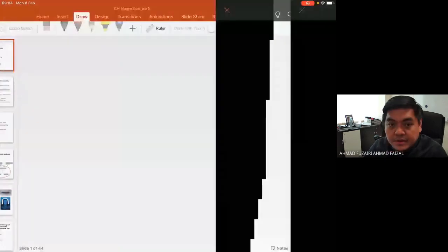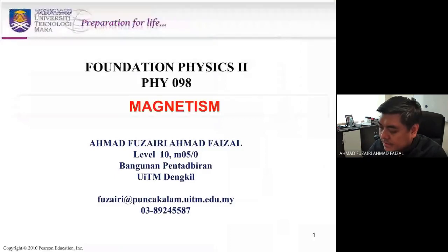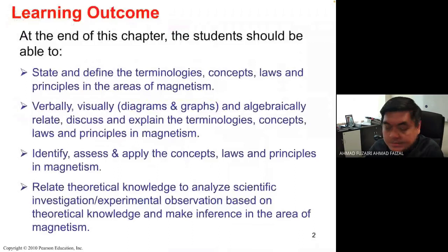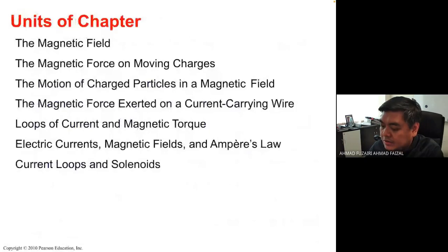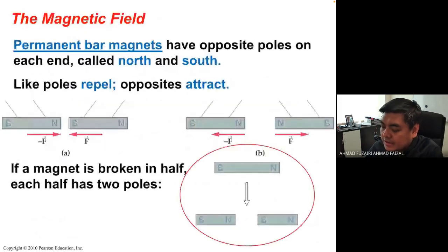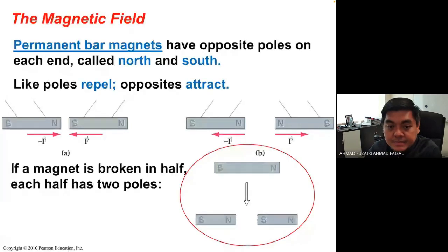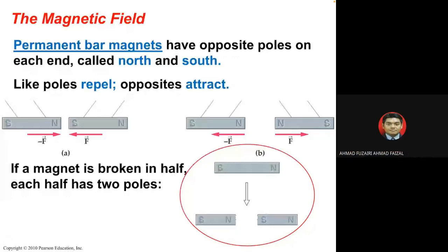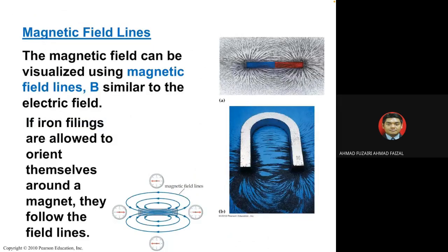This is the topic of magnetism. The learning outcomes and units of chapters cover from magnetic fields through to current loops and solenoids. Magnetic fields are contributed by permanent bar magnets that have opposite poles — like poles repel and opposite poles attract.